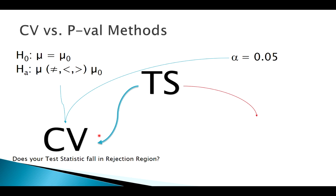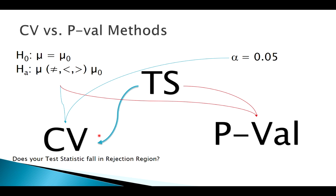For the p-value method: the p-value is based on the test statistic and the type of test. Once I find my p-value, I compare it to alpha — is it greater than or less than alpha? Both methods are essentially comparing the same thing — either comparing the test statistic directly to the critical value (based on test type and alpha), or comparing the p-value directly to alpha (based on the test statistic and test type).